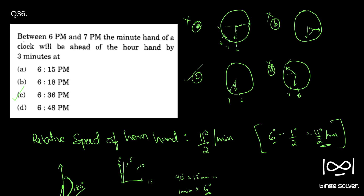In case you are not familiar with the relative speed concept or still have doubts, you can refer to question 7 of the 2014 paper. In the previous video where I solved that paper, I explained what relative speed is and how we can use it in clock questions in detail. Please comment under this video if you have any further doubts.